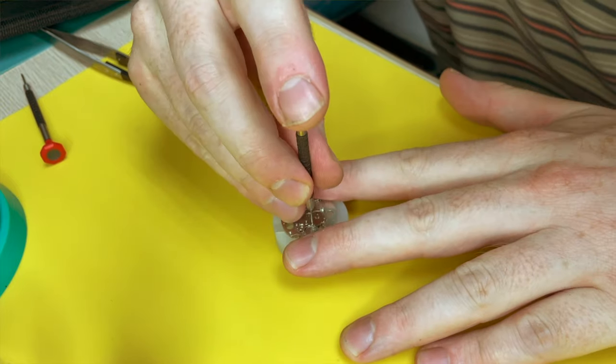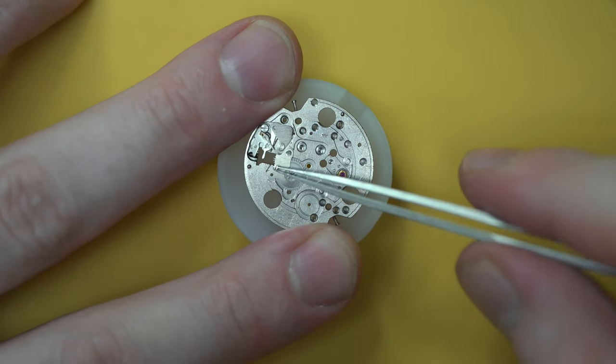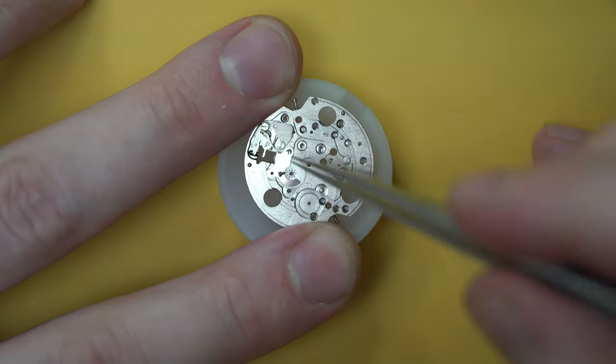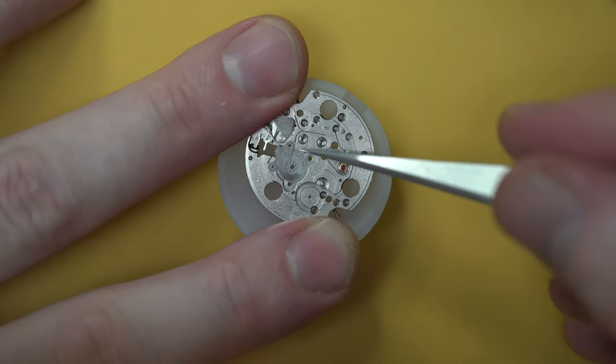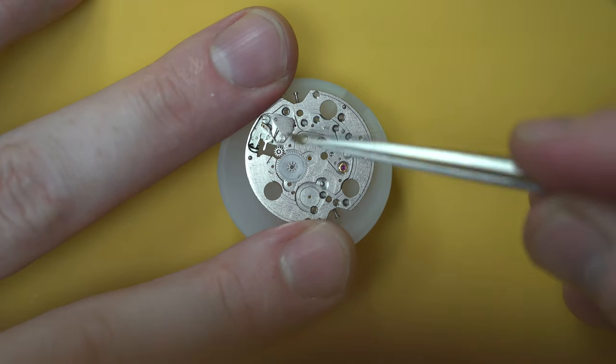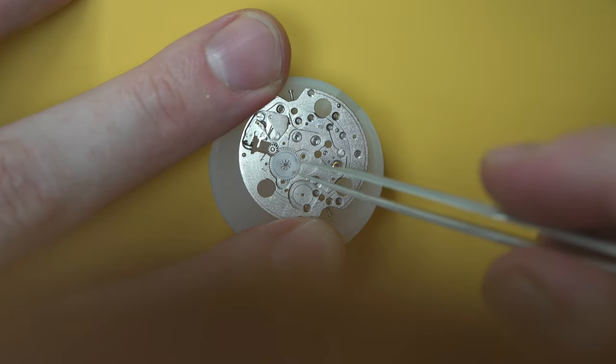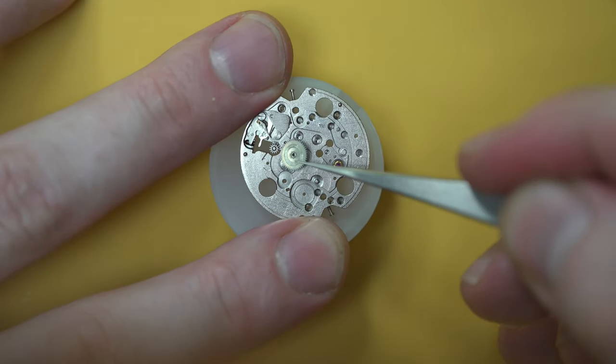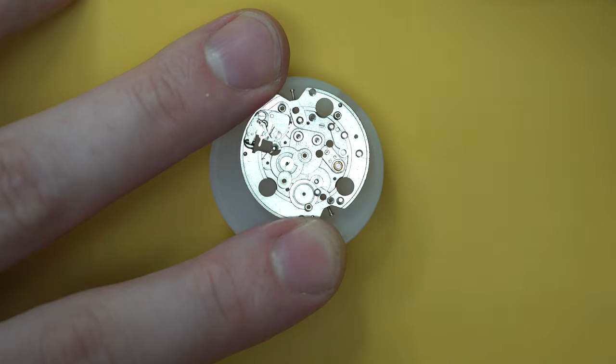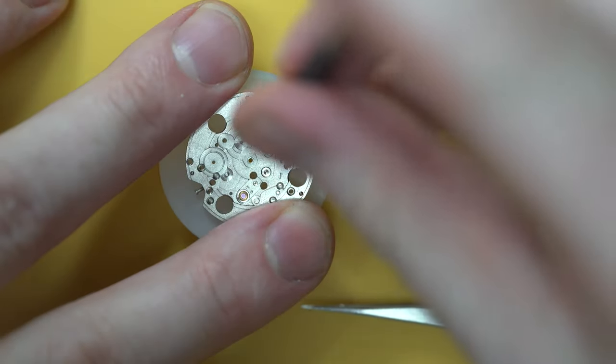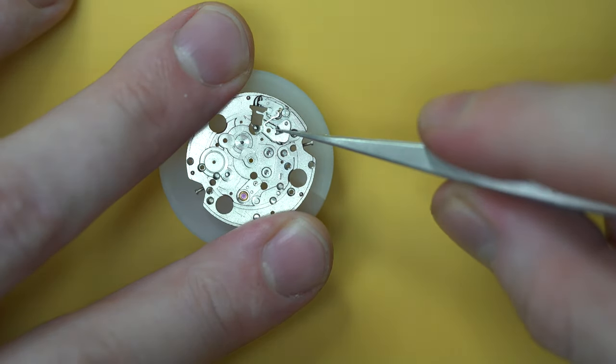So everything done on one side of the main plate, I'll flip it over and continue with the keyless works on the other side. The keyless works on this side, we've got a few more parts. So here I've got a plate which secures, I believe this wheel is called the minute wheel. You've got the hour wheel, which would be in the middle, which goes over the cannon pinion. Then this would be the minute wheel. Then we have a setting wheel and the setting lever spring.